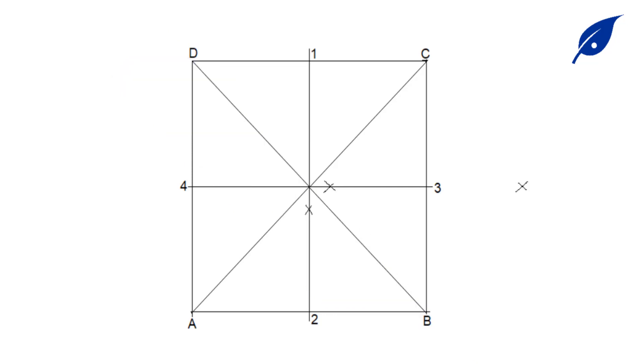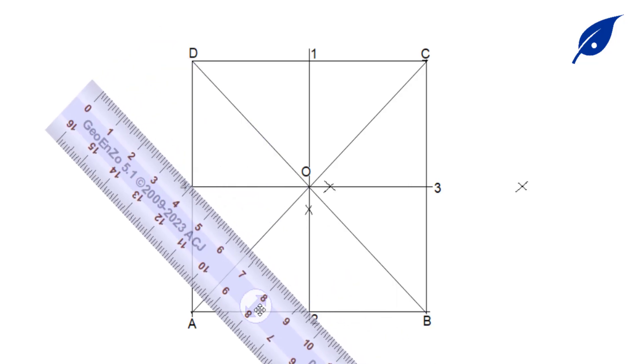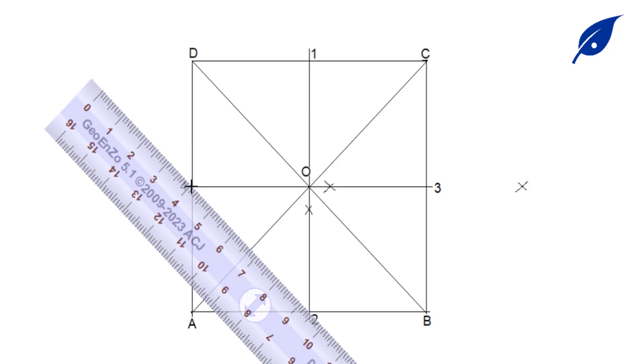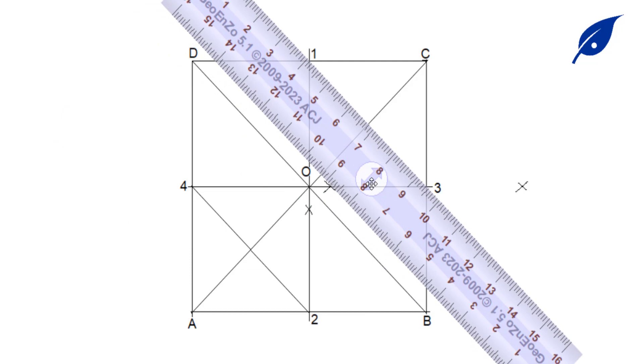After doing this, the next thing is to connect the diagonals of the individual squares: that's 2 to 4, the diagonal from 1 to 3,